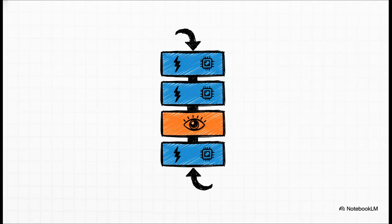So here's how it works. For every four layers inside the model, three of them are these new, super-efficient KDA layers. They do all the heavy lifting for speed and memory savings. But one out of every four layers is still a traditional full-attention layer. And that one layer makes sure the model never loses sight of the big picture, that it preserves that global understanding. It's truly the best of both worlds.